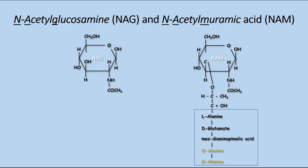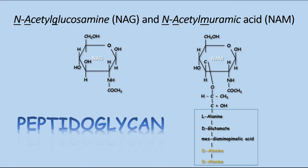Regardless of the type of cell wall a bacterial cell has, they will all contain the polysaccharide that is unique and known as peptidoglycan. Peptidoglycan is only found in bacteria. This is very important because it's going to be a target used for antibacterial components such as antibiotics. Peptidoglycan consists of the monomeric sugars known as N-acetylglucosamine, or NAG, and N-acetylmuramic acid, or NAM.